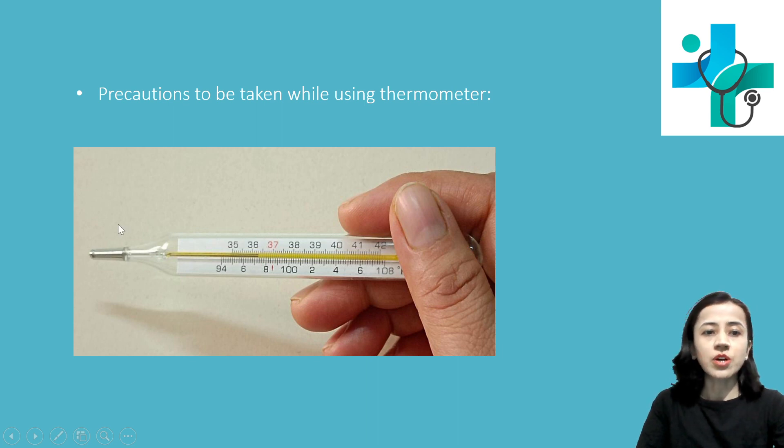Second, always wash the thermometer before using to prevent infection. And third, ensure to keep the mercury level below 35 degrees by just shaking the thermometer. You just place this temperature, keep the temperature below 35 degrees centigrade.